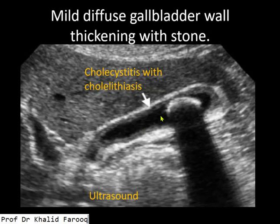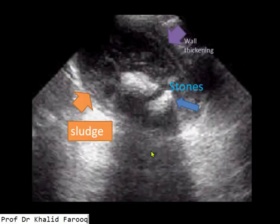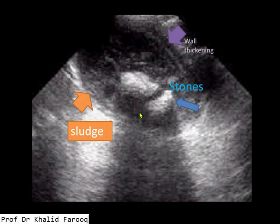This is ultrasound of the upper abdomen. We can see there is a stone in the gallbladder while mild diffuse wall thickening of the gallbladder is noted, suggesting cholelithiasis with cholecystitis. In another example on ultrasound of the upper abdomen, a couple of stones are noted in the gallbladder while there is diffuse wall thickening and we can also see sludge in the gallbladder.